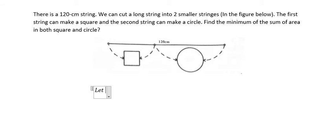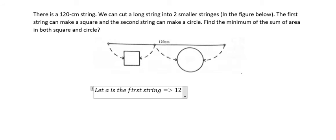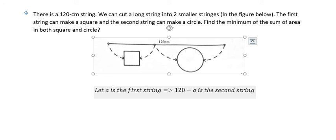We let 'a' be the length of the first string, then 120 minus a is the second string. The value of the first string equals the perimeter of the square, and similarly the second string equals the perimeter of the circle.